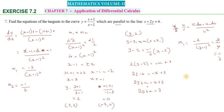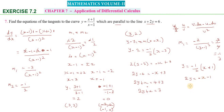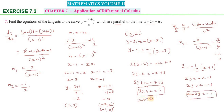For the second point (minus 1, 0): y minus 0 equals minus 1/2 into (x minus (minus 1)), so 2y equals minus x minus 1, giving x plus 2y equals minus 1. So the two equations of the tangents are x plus 2y equals 7 and x plus 2y equals minus 1. Thanks very much.